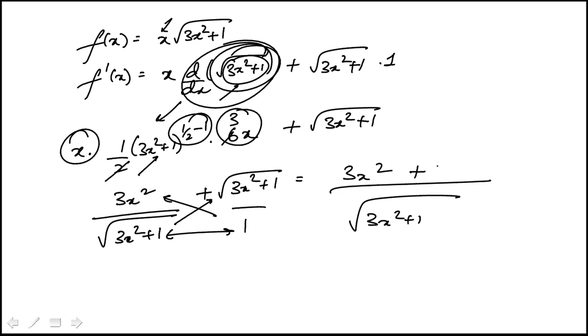And then that's going to just become 3x squared plus 1 because we have a radical here and a radical. So I can combine the like terms, 6x squared plus 1 over square root of 3x squared plus 1, which is answer choice D.